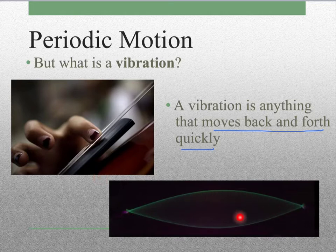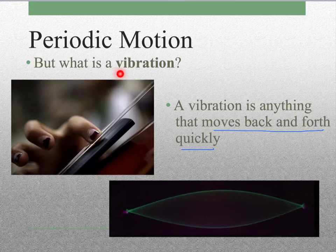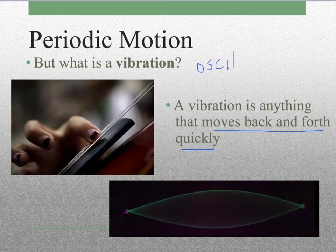And it might even look kind of like this. You can imagine this is one end of the instrument and the other, and you've got the string that you've pulled, and it's just going to go back and forth. So that back and forth motion is a vibration, or that other word, oscillation.